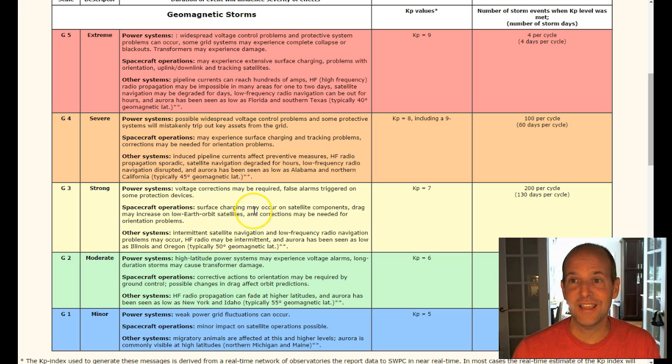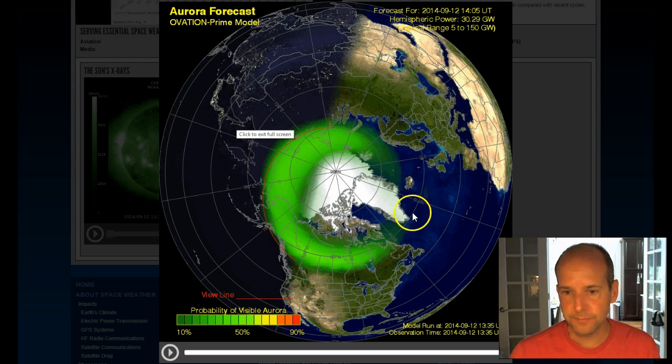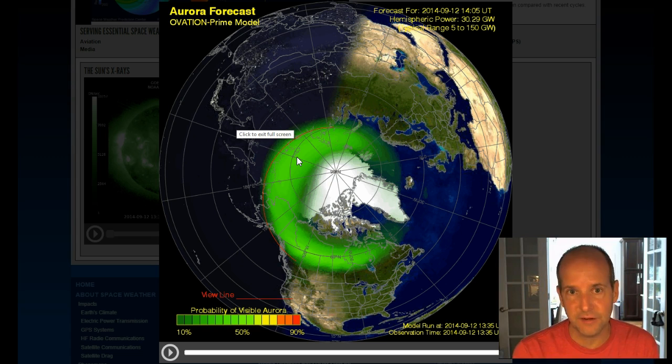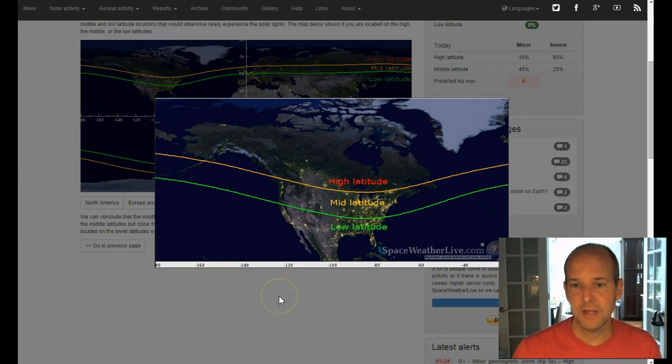This is where the northern lights are right now. Obviously, it's daylight in the United States. And you can see how vivid they are on the other side of the world right now. And the forecast is if everything comes together. And again, this is based on a forecast. Sometimes we're surprised. Sometimes we're disappointed that we could see the auroras all the way down into North Carolina. And this map shows a pretty good indication.